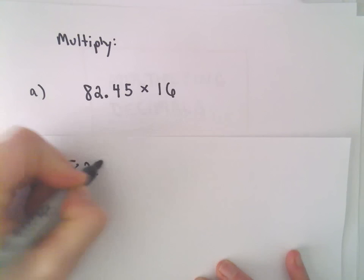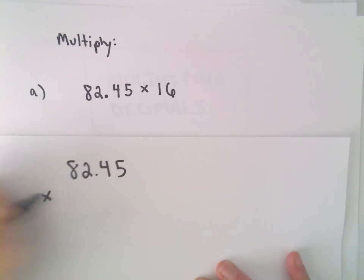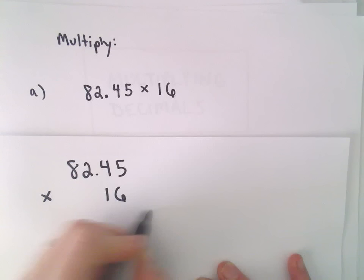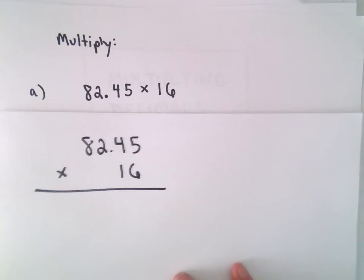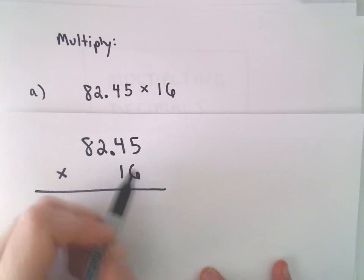We basically just do our normal long multiplication. And then I just count the number of digits that are to the right of my decimal places. And that'll tell me how far, that basically helps me find where the decimal place goes at the end. So we'll talk about that in a second. So let's do the multiplication.